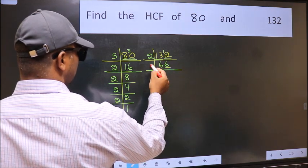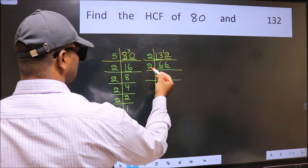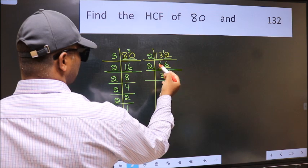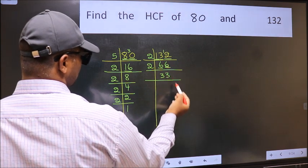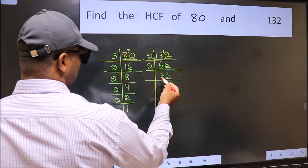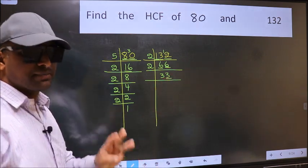Now last digit 6, even, so take 2. First number 6. When do we get 6 in 2 table? 2, 3, 6. The other number 6. When do we get 6 in 2 table? 2, 3, 6. Now last digit 3, not even, so this is not divisible by 2. Next prime number 3.